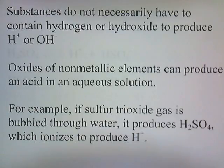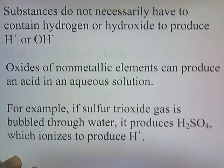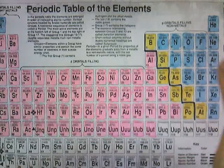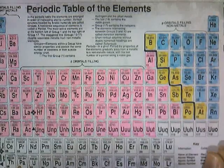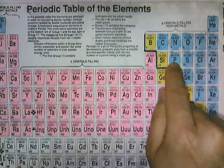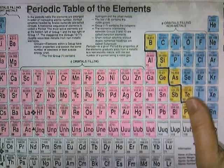Substances do not necessarily have to contain hydrogen or hydroxide to produce H+ or OH-. Oxides of nonmetallic elements can produce an acid in an aqueous solution. For example, if sulfur trioxide gas is bubbled through water, it produces H2SO4, which ionizes to produce H+. On the periodic chart, the metals are here in pink and the nonmetals are here in blue. Oxides of nonmetallic elements include things with sulfur bonded to oxygen, phosphorus bonded to oxygen, and carbon bonded to oxygen.